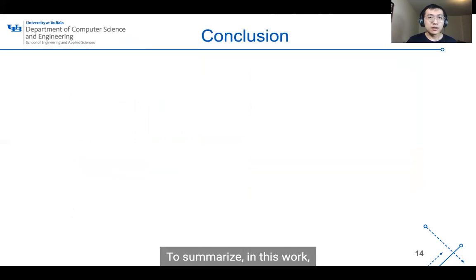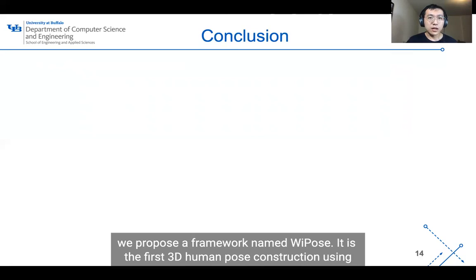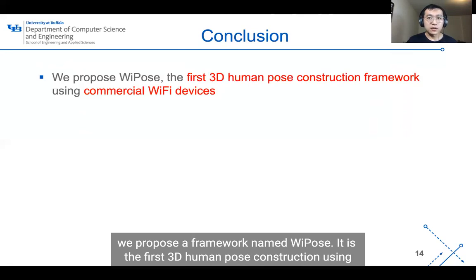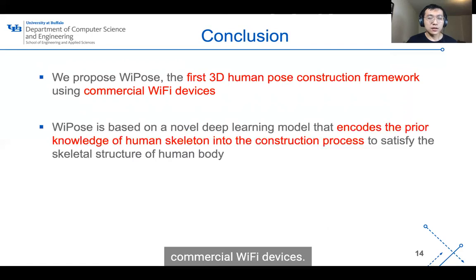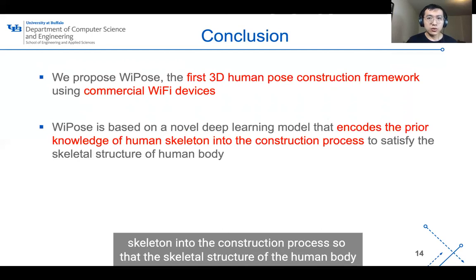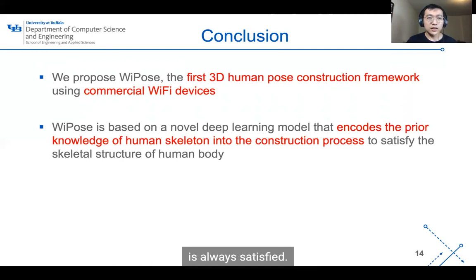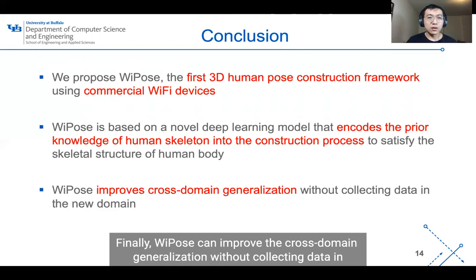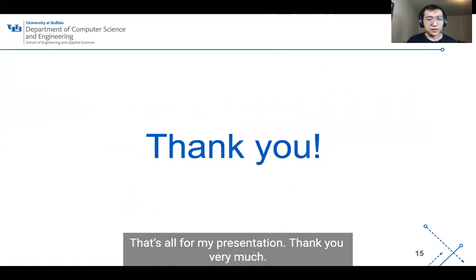To summarize, in this work we propose a framework named Wi-Pose. It is the first 3D human pose construction system using commercial Wi-Fi devices. Wi-Pose is based on a novel deep learning model that encodes prior knowledge of the human skeleton into the construction process so that the skeletal structure of the human body is always satisfied. Finally, Wi-Pose can improve cross-domain generalization without collecting data in the new domain. Thank you very much.